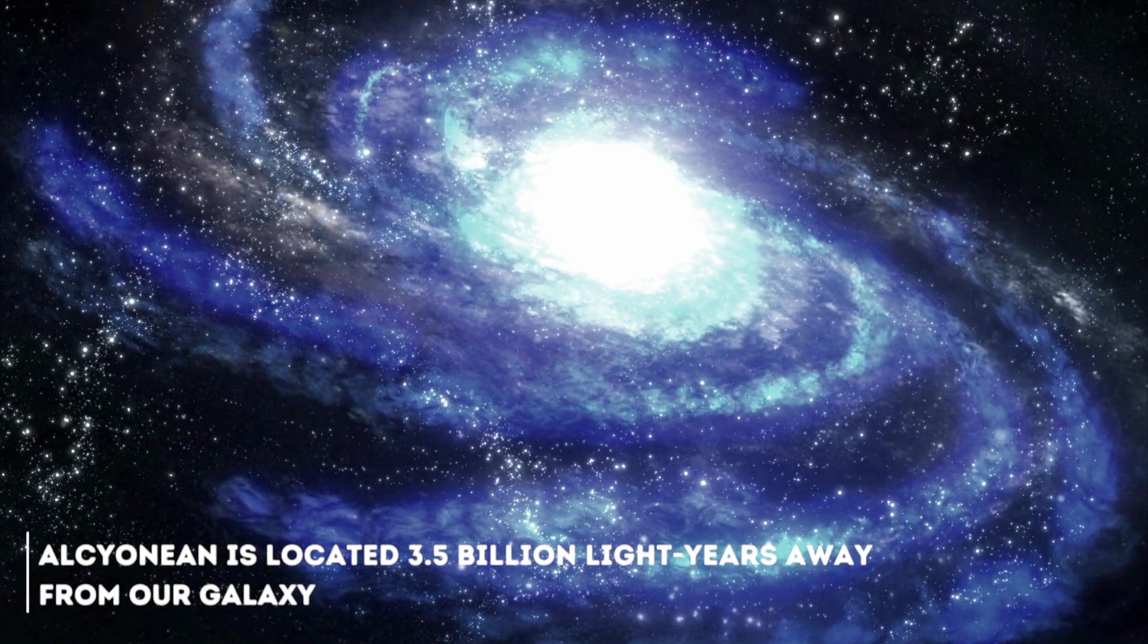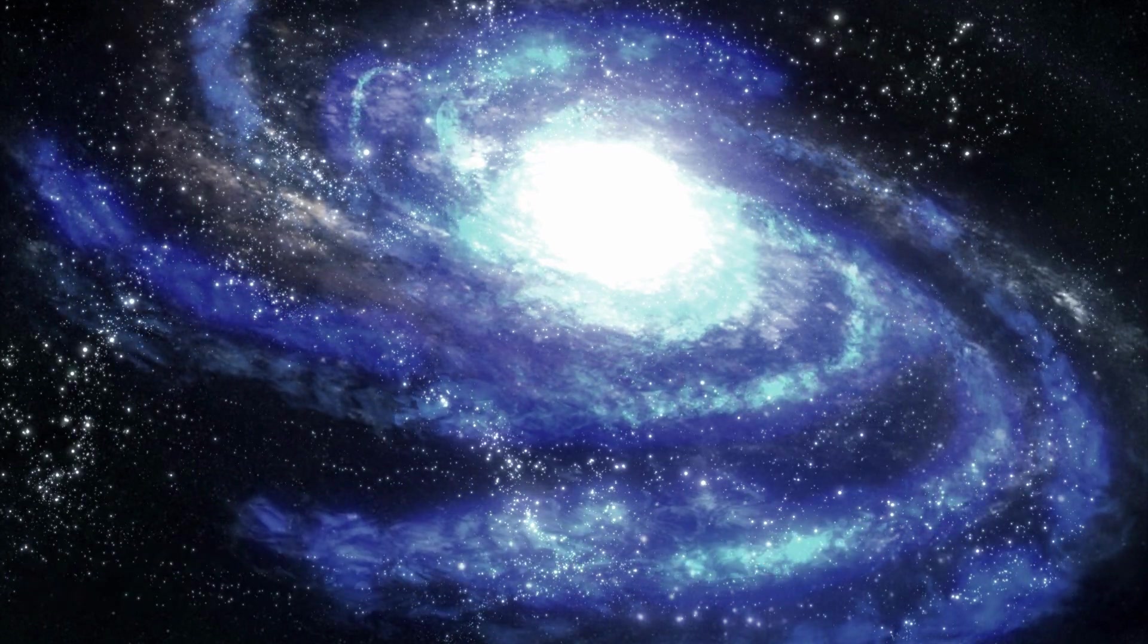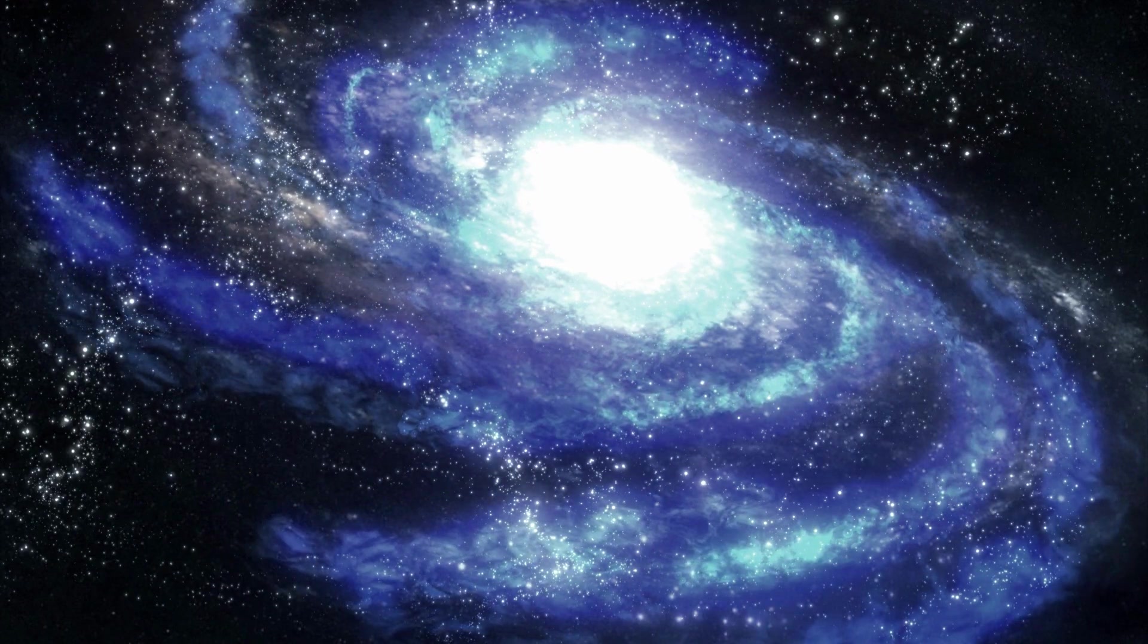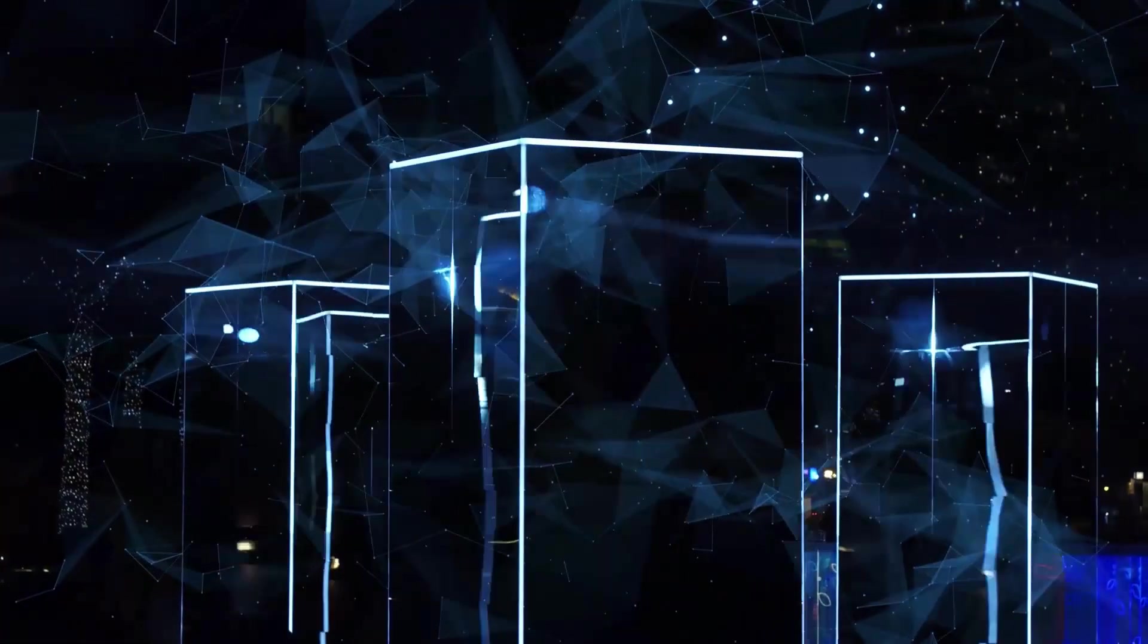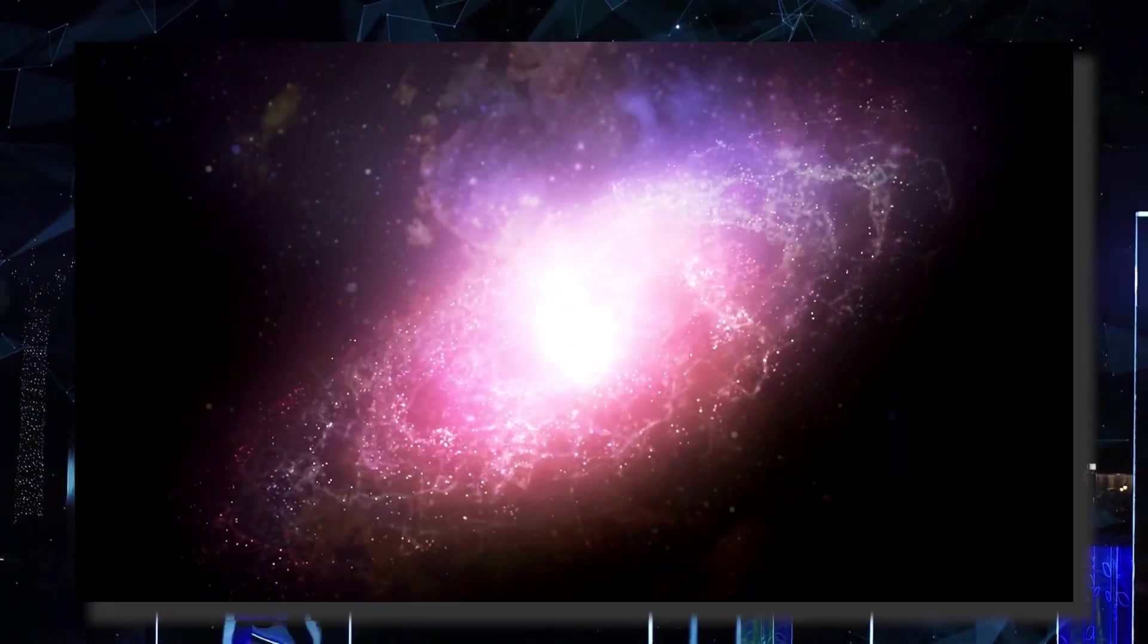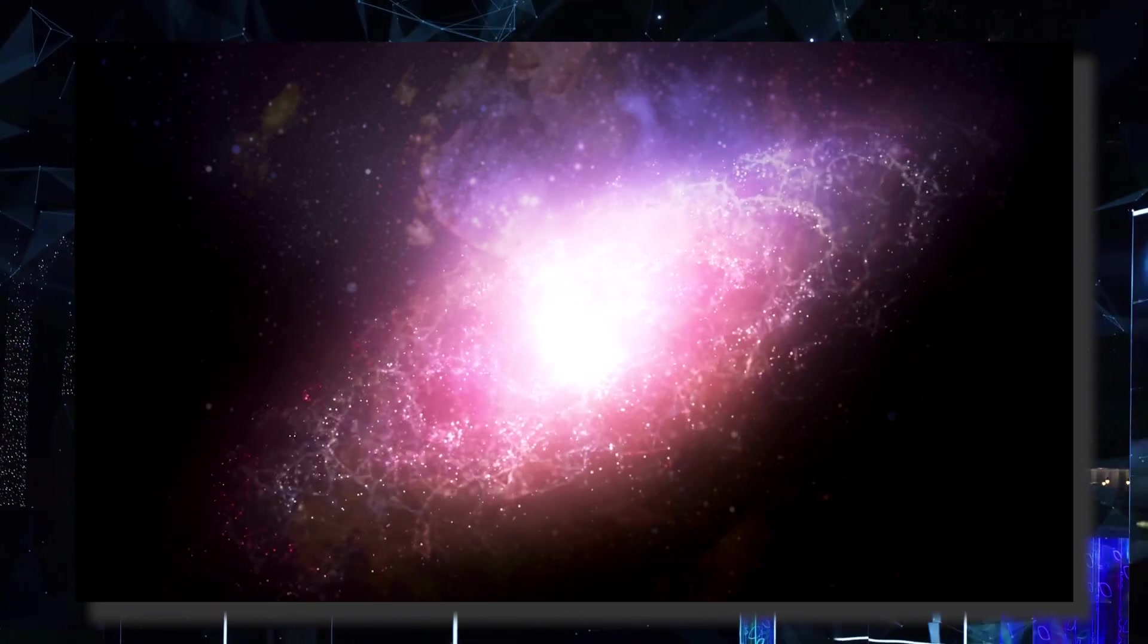Alcinean is located 3.5 billion light years away from our galaxy. According to several scientists, this galaxy is one of the strangest things ever found in our universe. The beginning of its history is complicated in itself. This massive and imposing galaxy was discovered by accident, in what has been catalogued as a great stroke of luck.